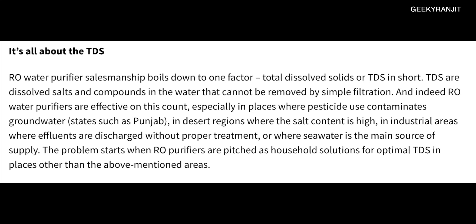As you can see from this screenshot, RO water purifier salesman's pitch boils down to one factor — TDS, or total dissolved solids. RO is very effective at lowering the TDS value — that is what RO systems do. But the problem is that yes, it filters and lowers the TDS, but it also filters out the good minerals in our water that are actually required — for example, magnesium, calcium, and others.